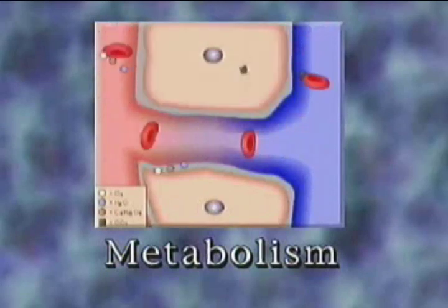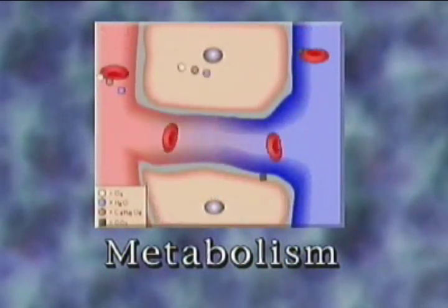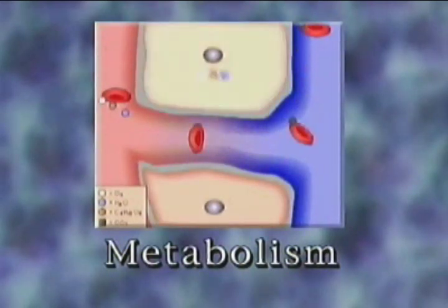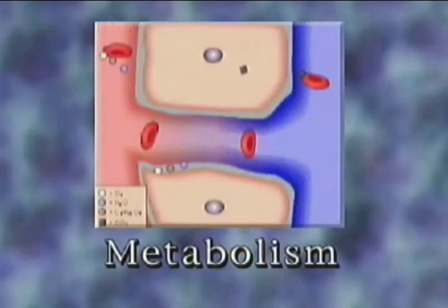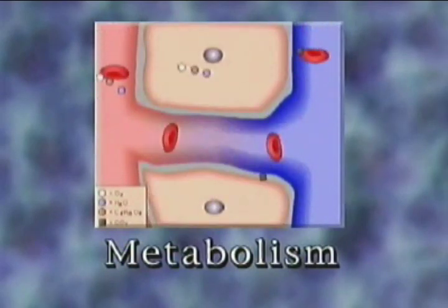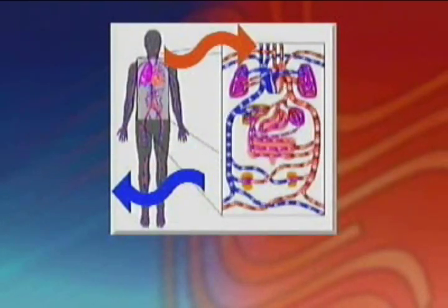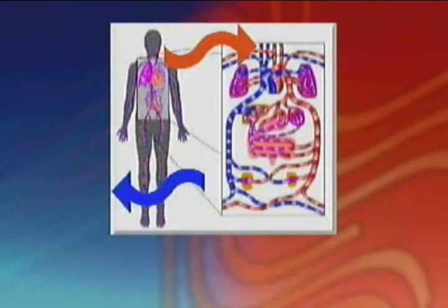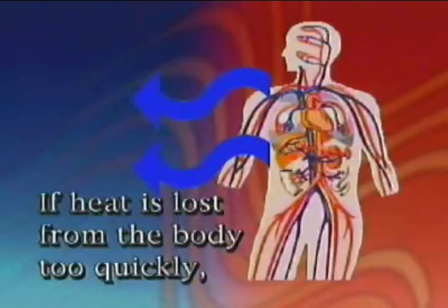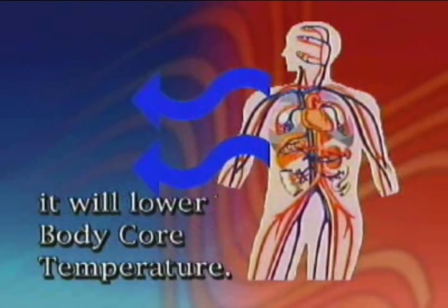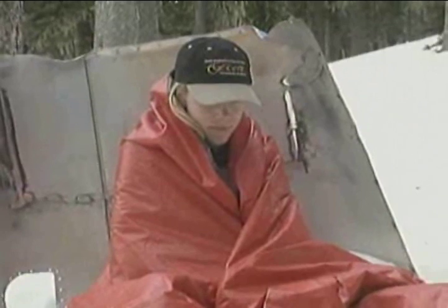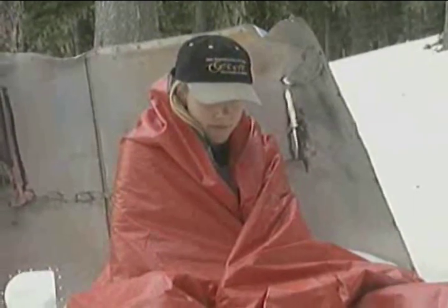Through the process of metabolism, the body core maintains an average temperature of 98.6 degrees Fahrenheit. As long as heat loss does not exceed heat buildup, the body will function normally. However, if heat is lost from the body too quickly, it will lower body core temperature. As the body core temperature drops, so does mental and physical efficiency.